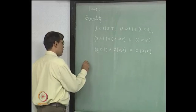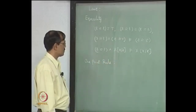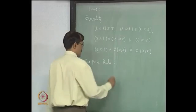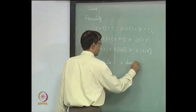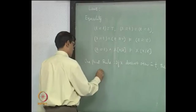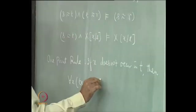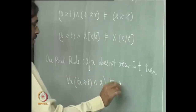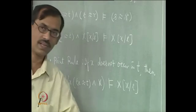Similarly, you can have some others — say the one-point rule. Here we are evaluating x at one point. Suppose x does not occur in t. Then you can have: for each x, x equal to t and χ(x) entails χ(x) substituted by t. You can also say this holds as an equivalence or only as an entailment.